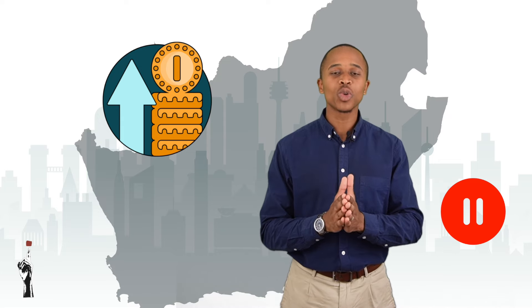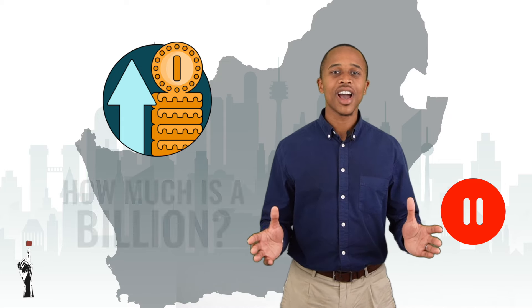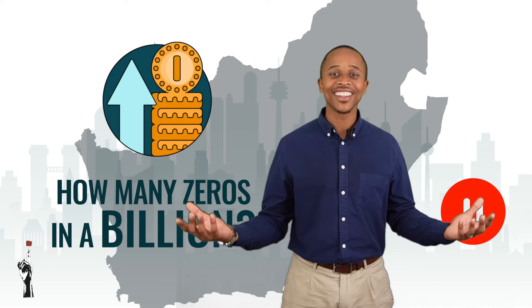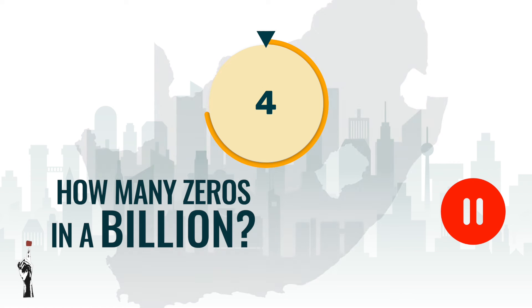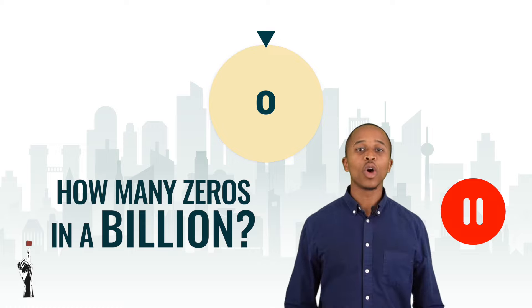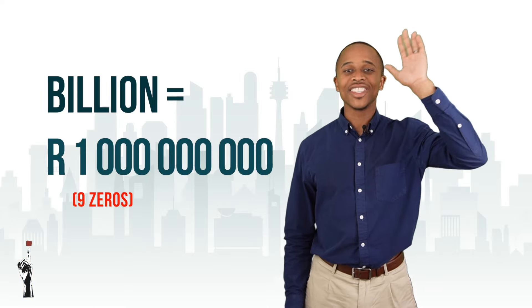Now grade 8, you can imagine if we're speaking about the national budget, or the country's budget, we're speaking about a lot of money — billions of rands. Now stop this video, talk to the class, and discuss how much exactly is a billion. How many zeros does a billion contain? Those of you who said that a billion contains nine zeros, you are correct. Now let's move on.